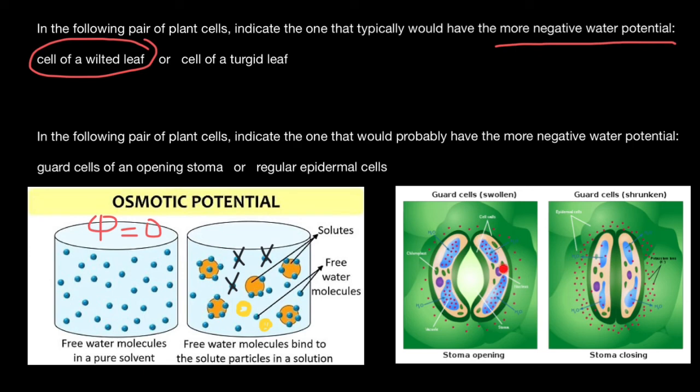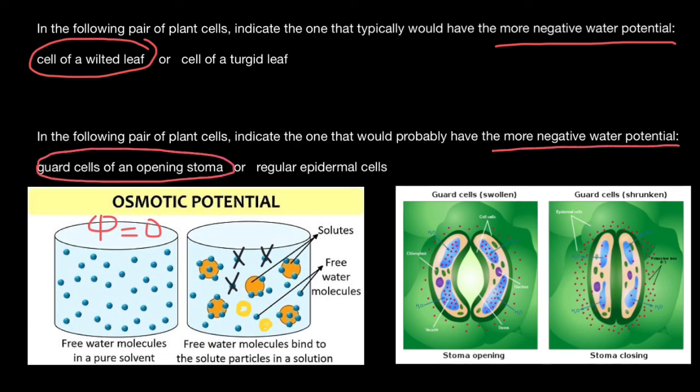because they would be inflated with water, because they would have less water potential than surrounding cells because of the pumping of the solutes inside the vacuole. So as you see, guard cells of the opening stoma would have more negative water potential than regular epidermal cells.